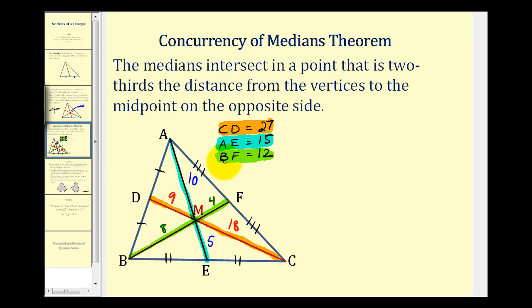Let's go ahead and state this more formally. AM would be two-thirds of AE, and ME would be one-third of AE.